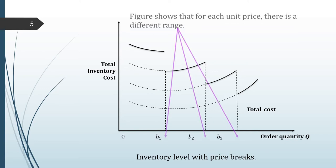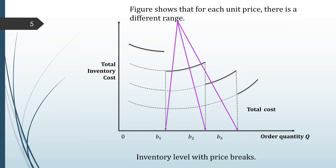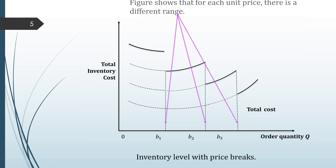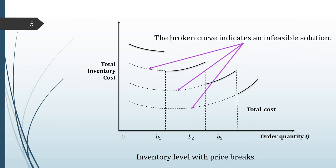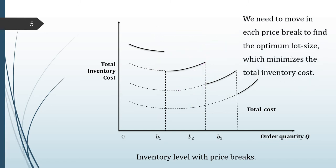Here is the graph, which shows that B1, B2, B3 are price breaks — that is, for each unit price there is a different range. We also have a solid curve and a dotted (broken) curve. The broken curve indicates an infeasible solution. We need to move through each price break to find the optimal lot size that minimizes the total inventory cost.